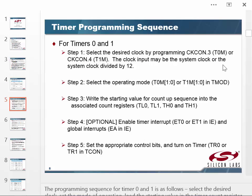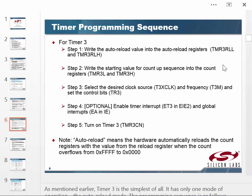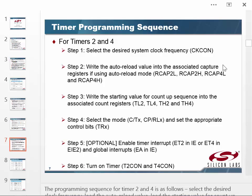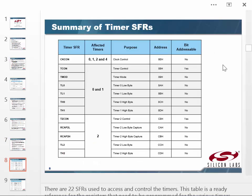The programming sequence: we set the clock — it can be the system clock or the system clock divided by 12. Normally we use the system clock divided by 12. Here's a summary of the special function registers for timer 2: we have timer 2 control, low and high byte captures, capture for event counting, and current counts TL2 and TH2. If you ever have to use a timer, you'll pull out the data sheet and look at examples — you're not going to remember all these steps.